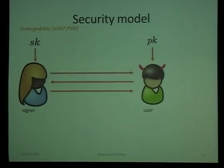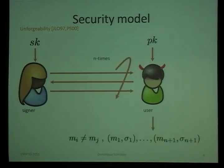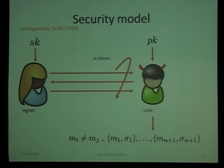For regular signature schemes, unforgeability is easily defined: you have an oracle, you can query it, and if you manage to output a fresh message and a valid signature, you win. In the case of blind signatures it's more difficult, because we don't see the messages. We give the user the public key and let him interact with the signing oracle as many times as he wishes. The user wins if he manages to compute one more message-signature pair — after N queries, he must compute N+1 message-signature pairs that verify, with all messages distinct.